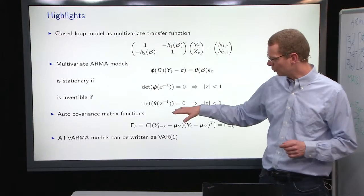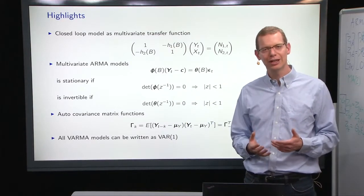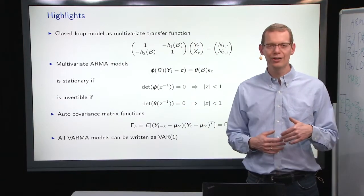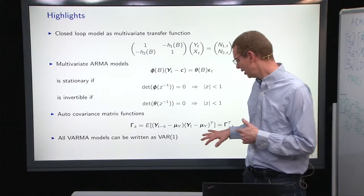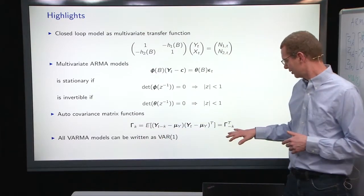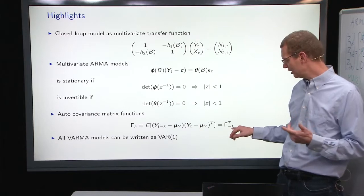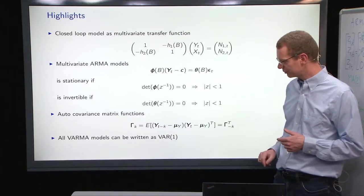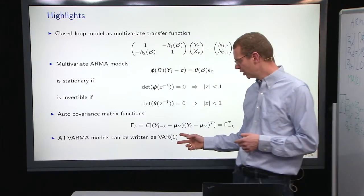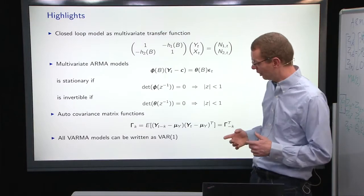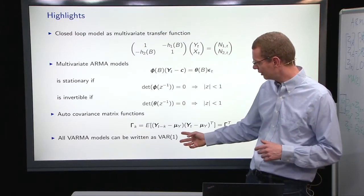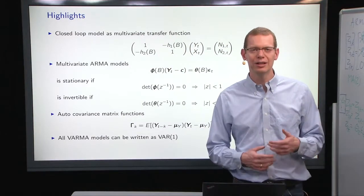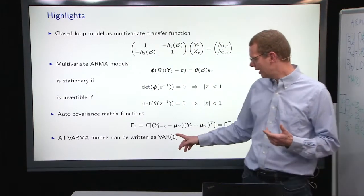The stationarity and invertibility, compared to the univariate case, we just need to add a determinant, and also for the autocovariance matrix function, it's quite straightforward to compare with the univariate case. We just have to make sure that whenever we swap the order of time, we have to transpose. And then one very important thing is we can take any multivariate ARMA model and represent that as a multivariate AR1 model. It's just a dimension that becomes larger.